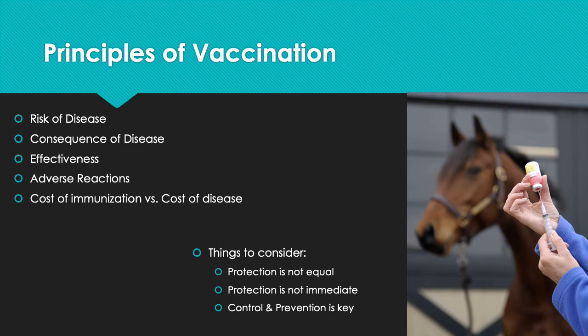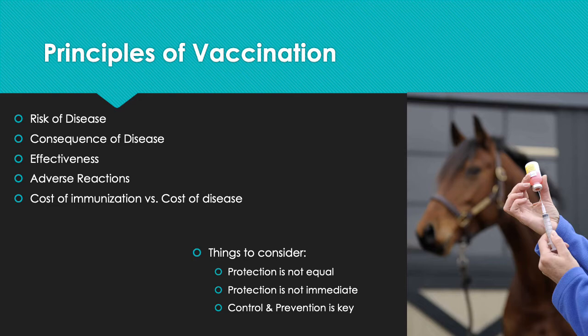Other things to consider: protection is not always equal. You may give the vaccine to your five pasture horses and one may still come down with it — the same as the flu vaccine in people, where every strain is different. Protection is not immediate either, so if you decide to go to a horse show and give the vaccine that day, it's not going to immediately start working. Also, control and prevention is key. The main purpose of vaccines is to prevent a disease from spreading into your herd, and some diseases we'll discuss are zoonotic, meaning people can get them as well, so you want to control and contain them.